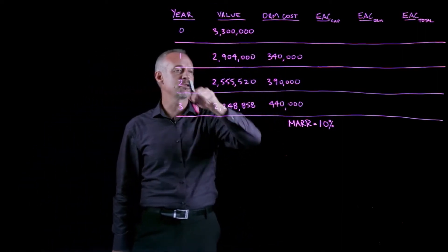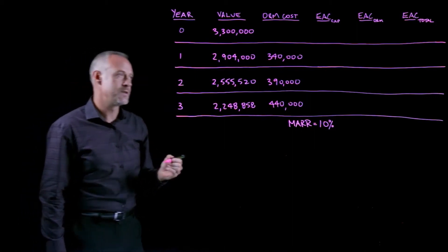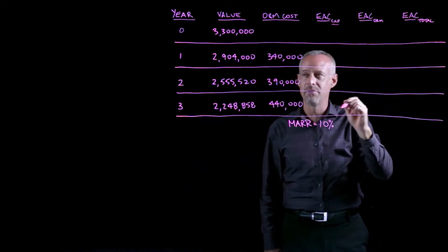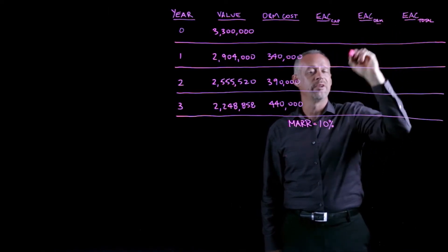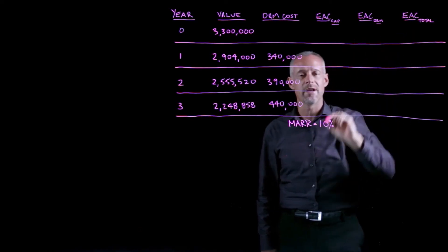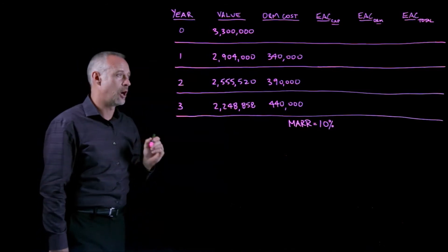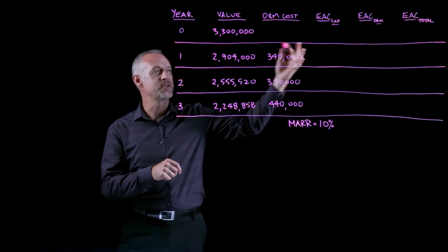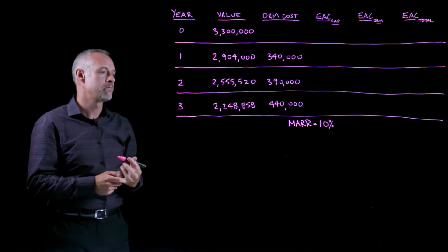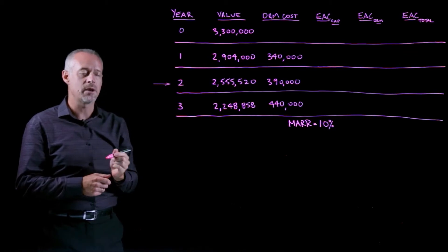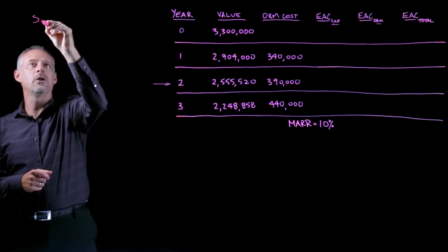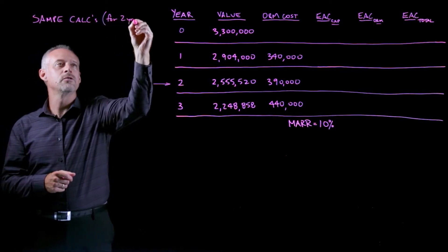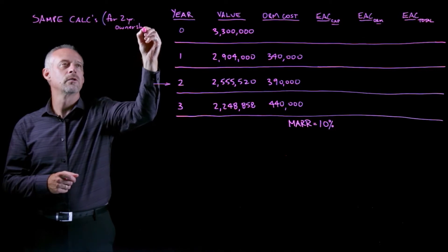So this is the information I can extract from reading the problem. Our task is to calculate three things: the equivalent annual cost related to the capital purchase and resale of the device; the equivalent annual cost related to the operating and maintenance costs; and then add those two things together to get the equivalent annual cost that's the total. We won't do the calculations for every cell in this table. I'm going to pick two years as a scenario and do the sample calculations for that.